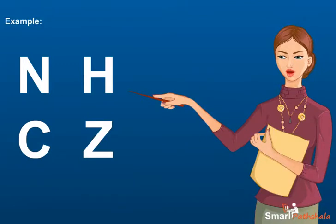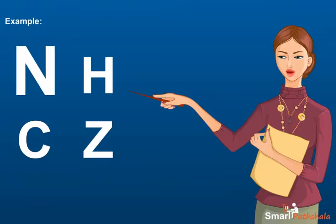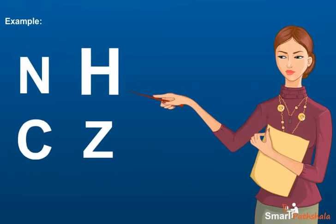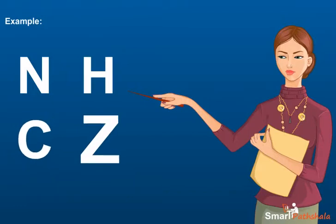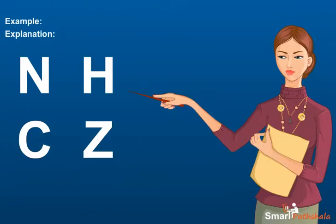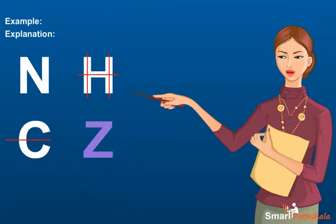Example: draw a line of symmetry in the following figures — N, H, C, Z. Explanation: we can draw the lines of symmetry as shown. N has no line of symmetry. H has two lines of symmetry. C has one line of symmetry. Z has no line of symmetry.